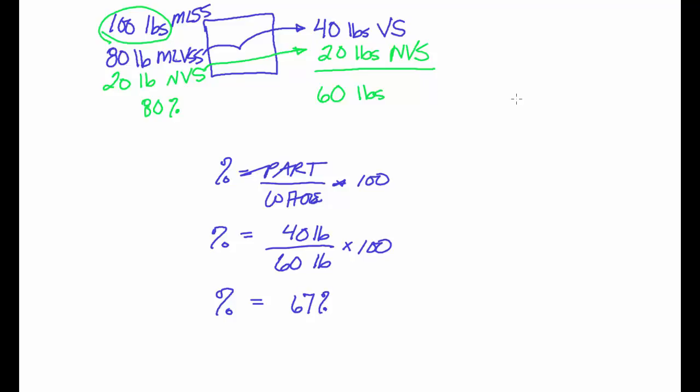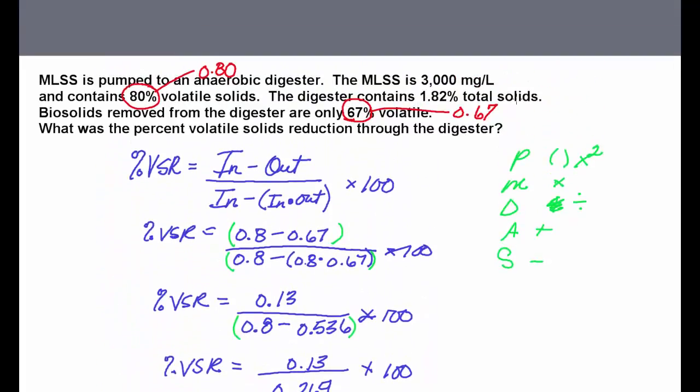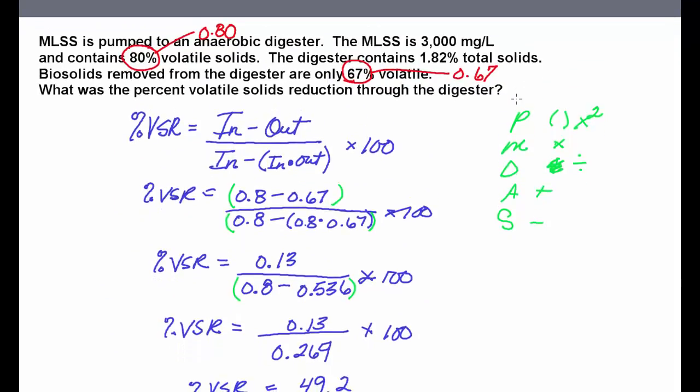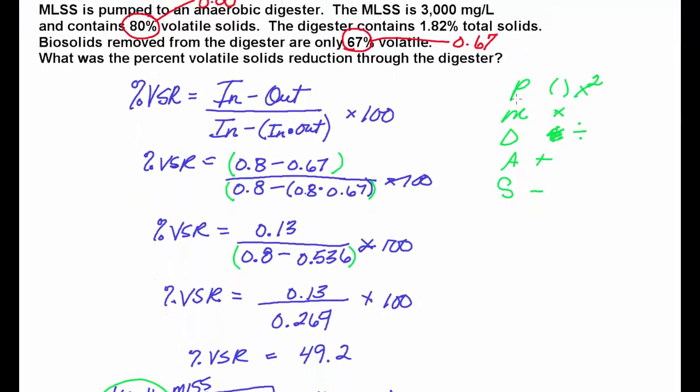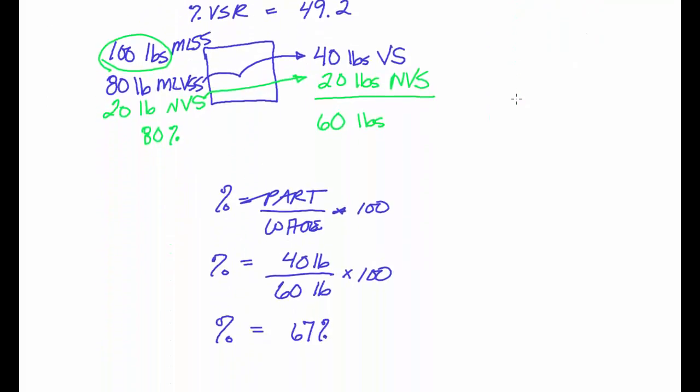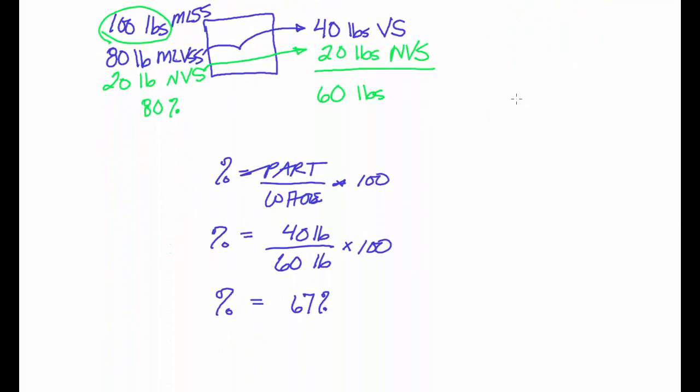Which is just what happened up here. So we had this other equation where we put in 80% and we took out 67% volatile and it was basically a 49% reduction. And then down here you see the same thing. And it's a little bit off just because of rounding.